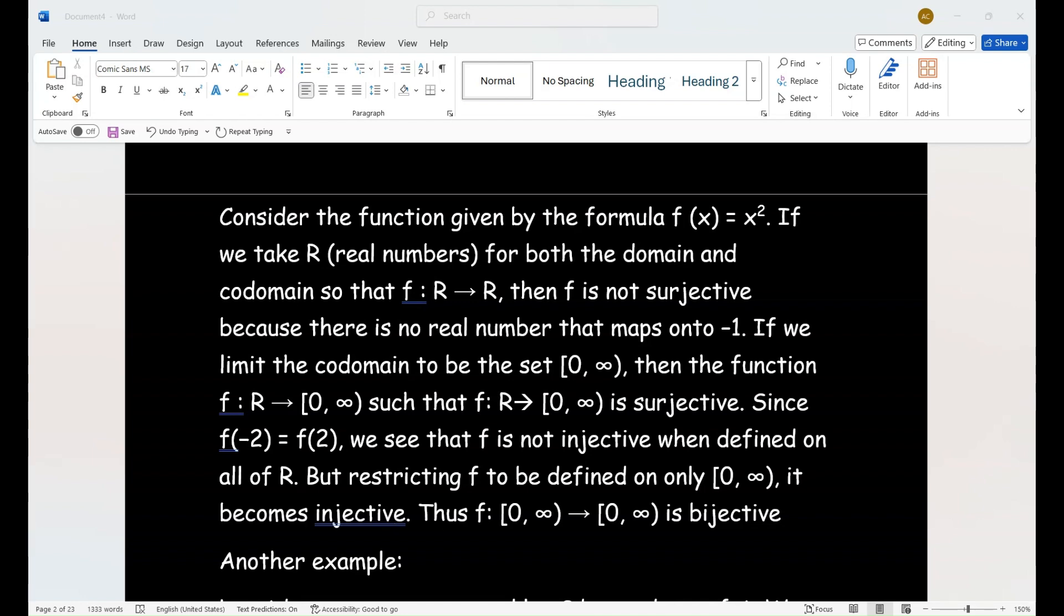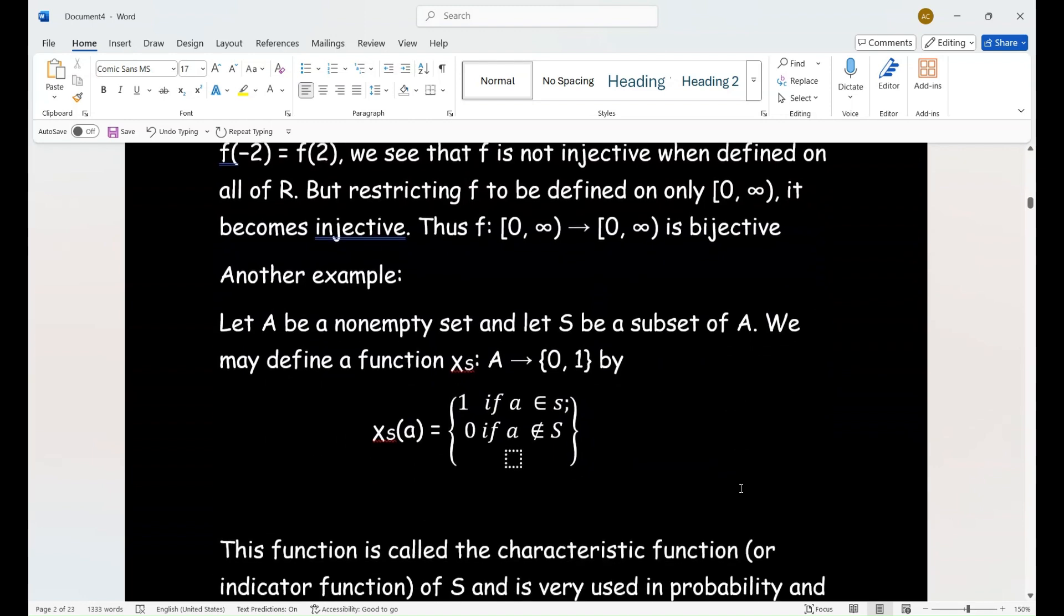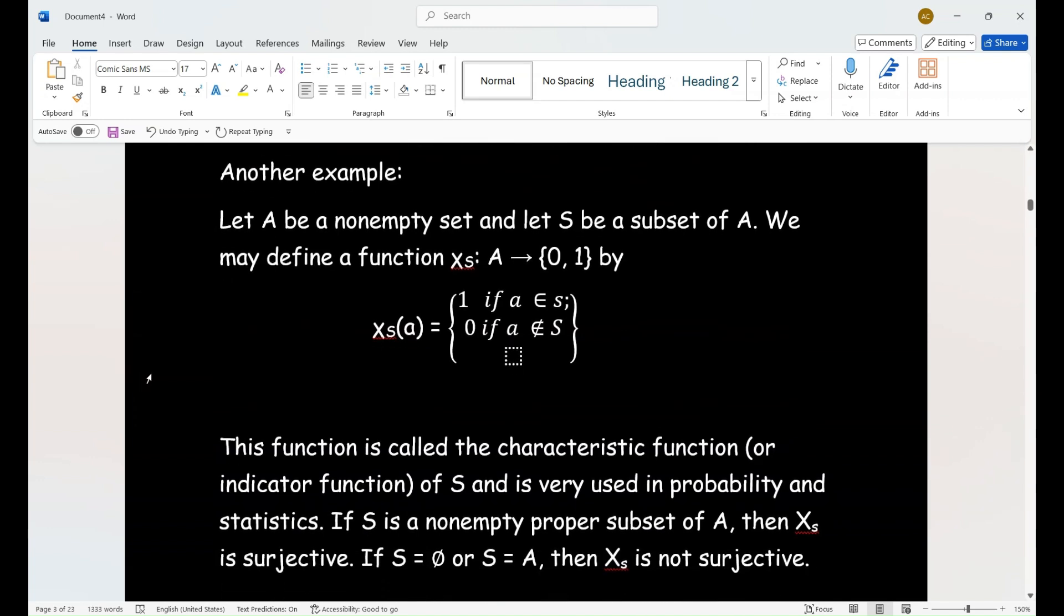The other example, and some of you applied people might like, the applied mathematicians. We have a subset here. S is a subset of A, and you can define a function as follows. And this is what is known as the characteristic function or indicator function of S. It's very used in probability and statistics. So if S is a non-empty proper subset of A, then χ_S is surjective. But if there's an empty set, or S equals A, then it would not be surjective.